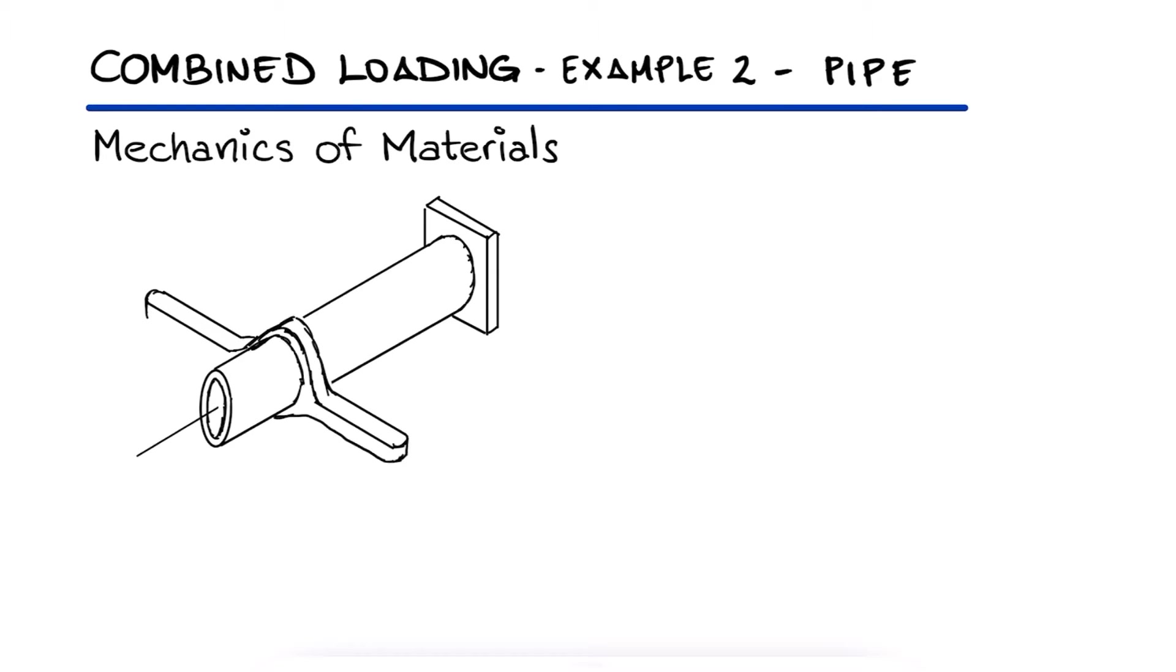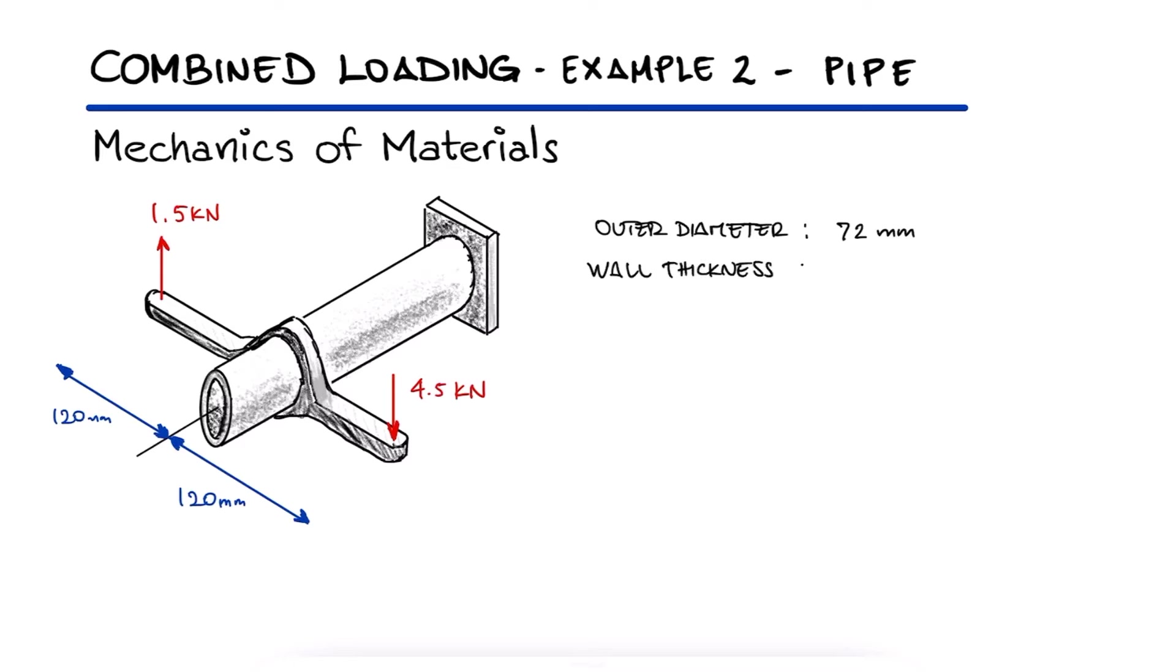The handle attached to the steel pipe is subjected to two external loads. The pipe has an outer diameter of 72mm and a wall thickness of 5mm. What are the principal stresses at location A?